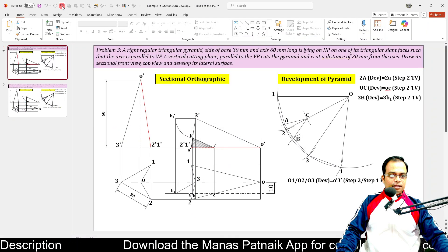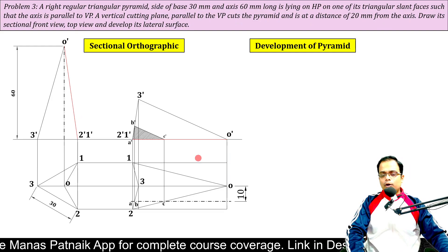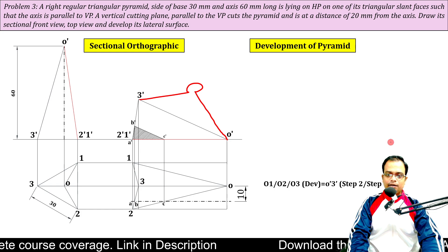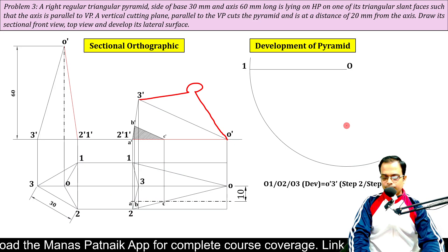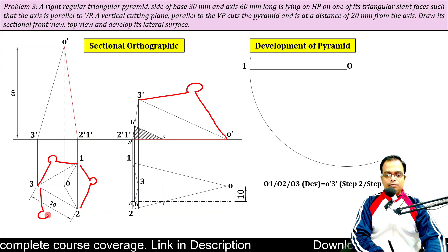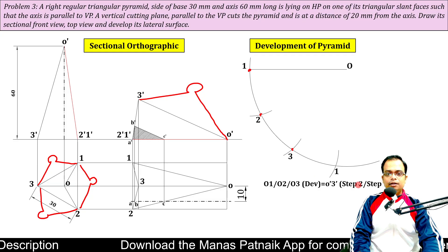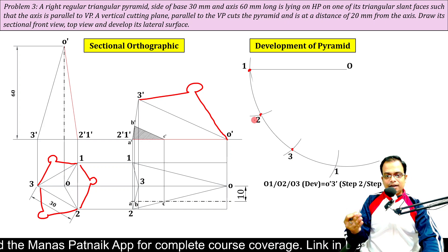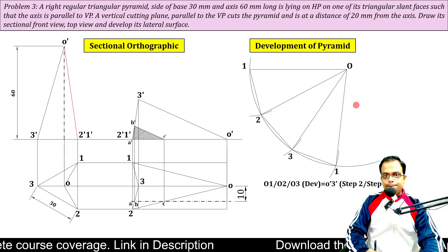So we've reached the cutting points. With O'-3' as the radius, simply make an arc — you know the true length. Now for the base: the base sides are all 30 mm. With 1 as center, cut an arc to get 2; with 2 as center get 3; and so on. Since all base points are connected via straight edges, connect 1 to 2, 2 to 3, 3 to 1 by straight lines, then connect all slant edges.